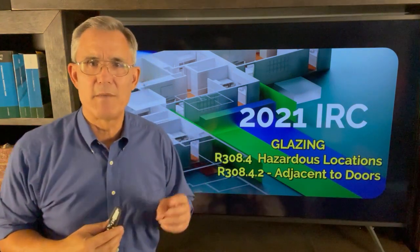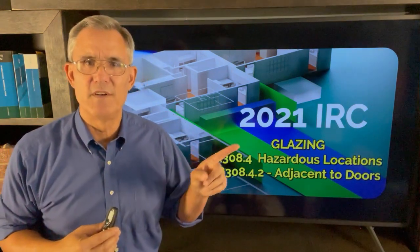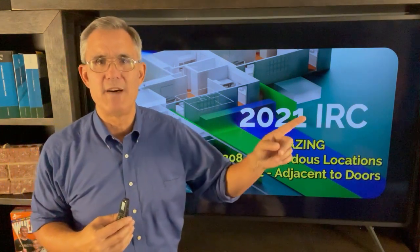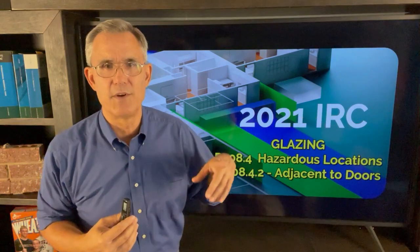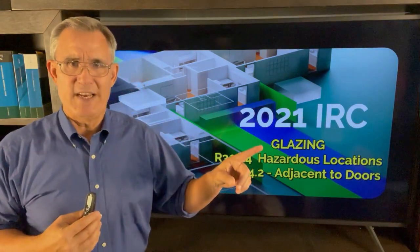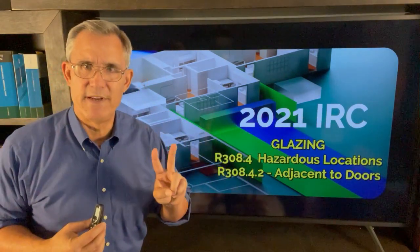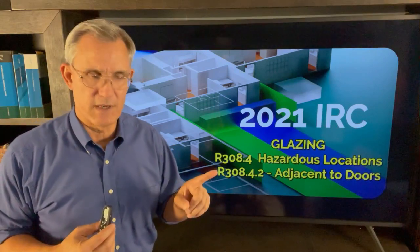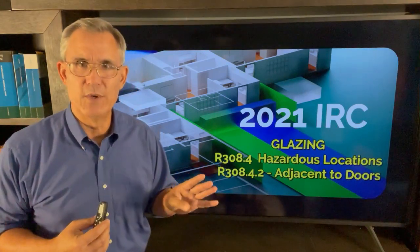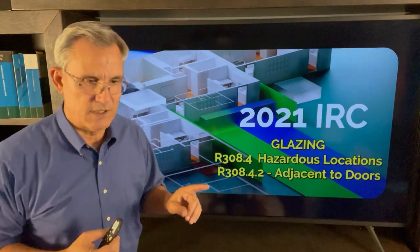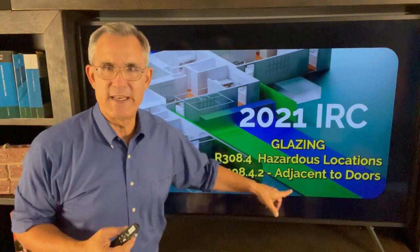Welcome back to part two of our series about the 2021 International Residential Code, studying safety glazing and hazardous locations. In video two, we're going to talk about R308.4.2, which covers safety glazing adjacent to doors. This is the old standby — we've had this in the code book for years.